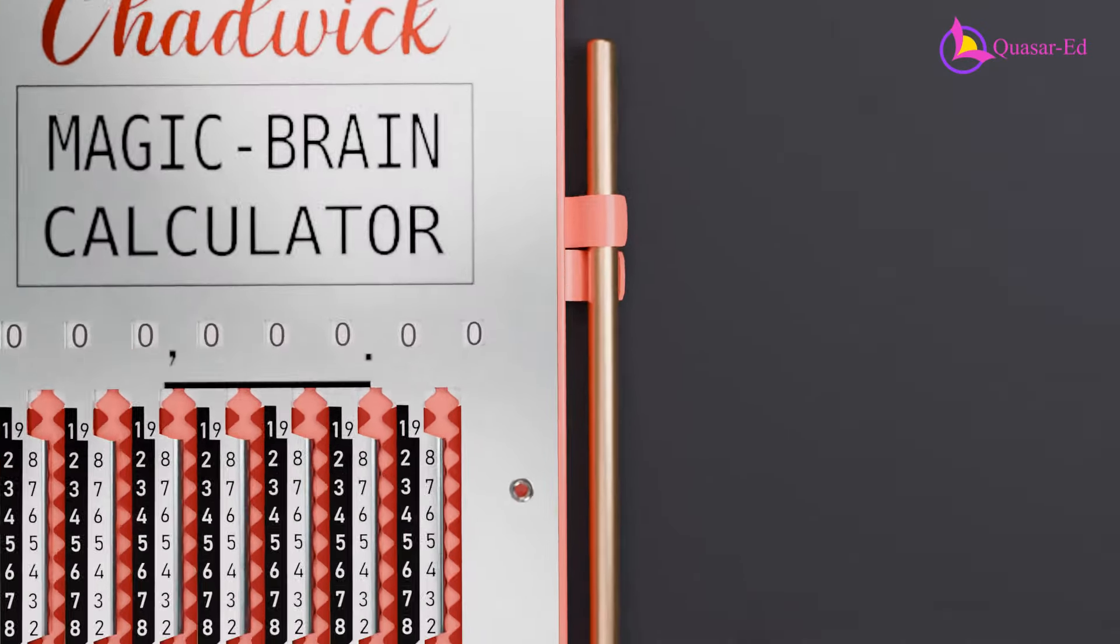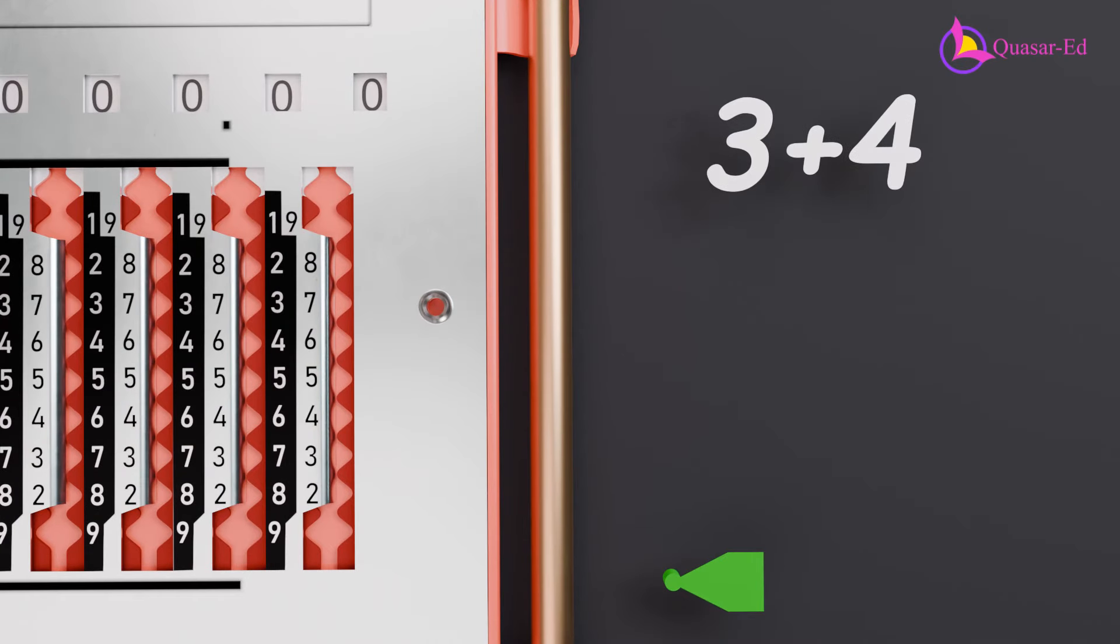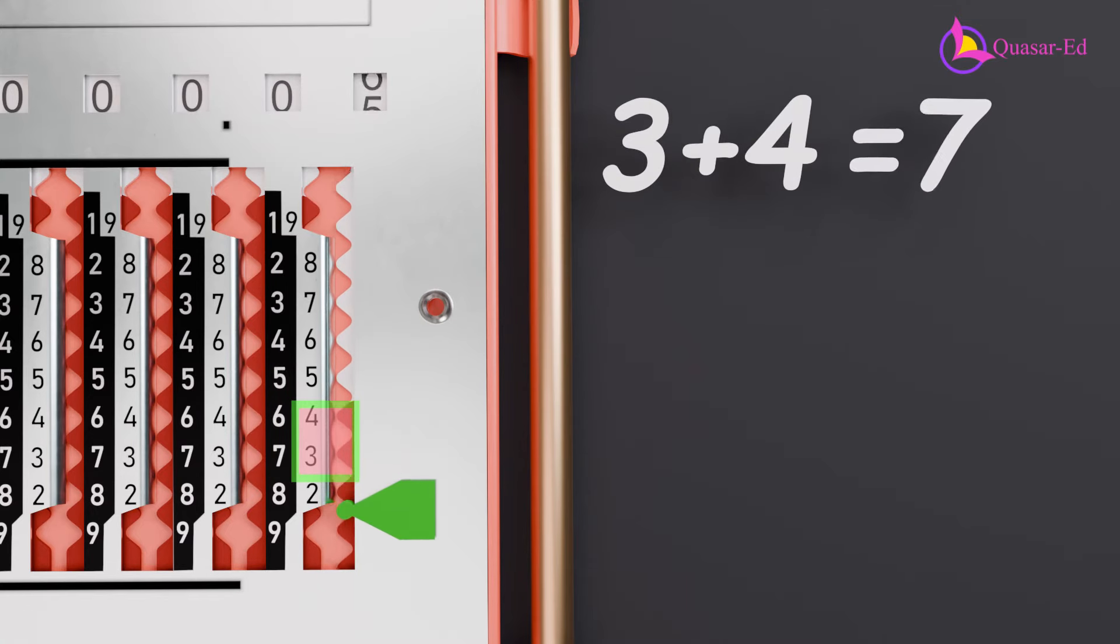So let's try it out. To add three and four, we note that all sections are red, indicating that we need to pull down. Using the black numbers as a reference for addition, we pull down three, then four, and get seven.